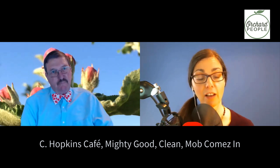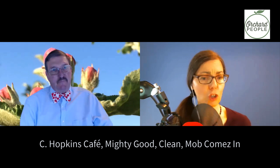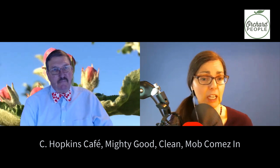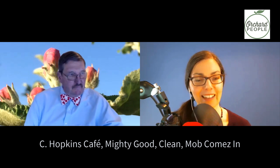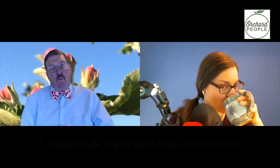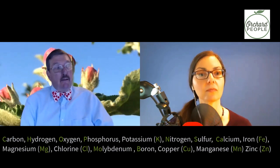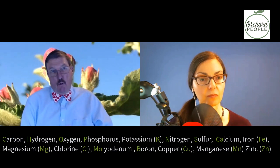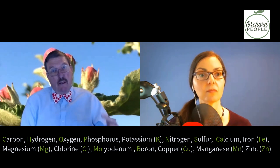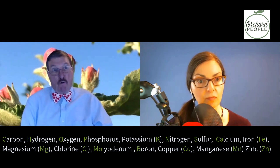So C. Hopkins Cafe - like Charlie Hopkins - if you write it out with the chemical symbols, that tells you what the nutrients are. The C is for carbon. Hopkins breaks down in order: H is hydrogen, O is oxygen, P is phosphorus, K is potassium, N is nitrogen, and S is sulfur. That's where you get H-O-P-K-N-S for Hopkins.